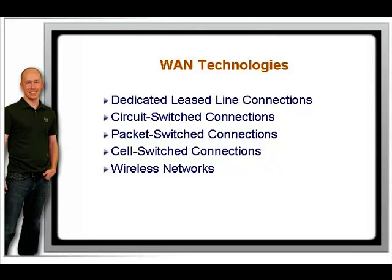Packet-switched WAN service allows you to connect to the provider's network in much the same way as a PC connects to a hub. When connected, your traffic is affected by other customers and theirs by you. This can be an issue, but it can be managed. The advantage of this shared bandwidth technology is that with a single physical connection from your router's serial port, you can establish virtual connections to many other locations around the world. So if you have a lot of branch offices far from the head office, a packet-switched solution is a good idea. Packet-switched circuits usually use Frame Relay or possibly X.25.